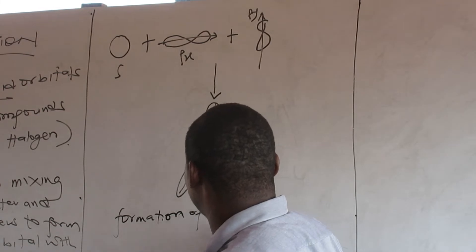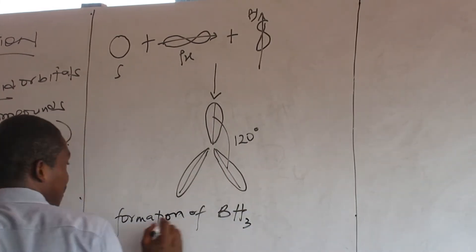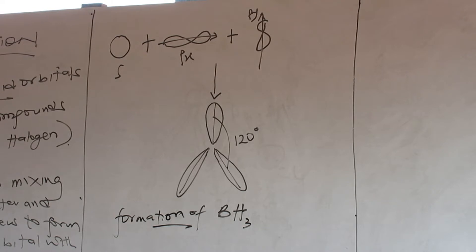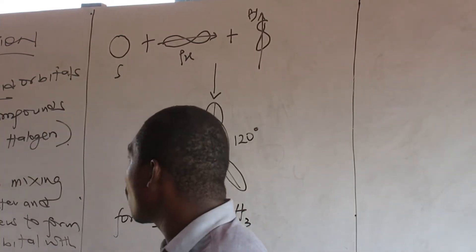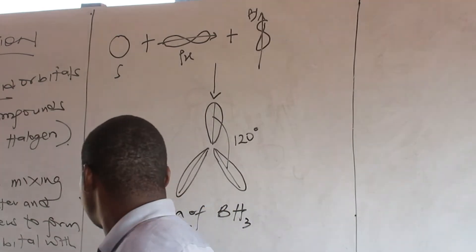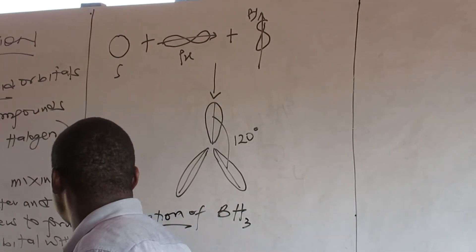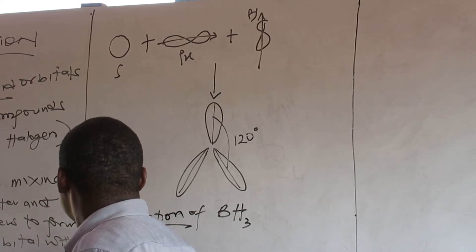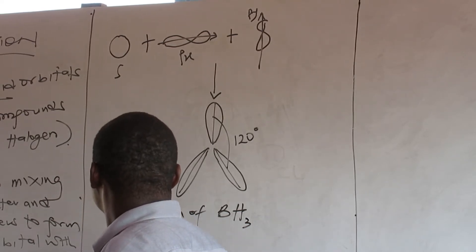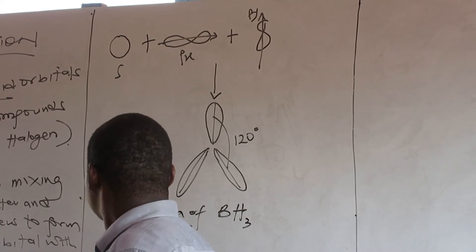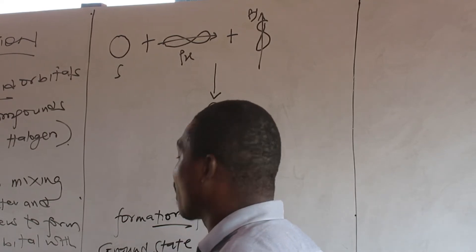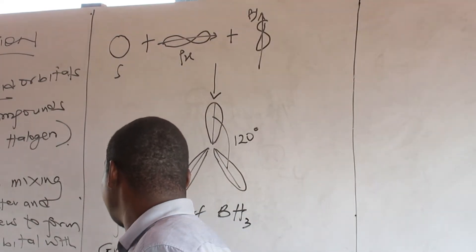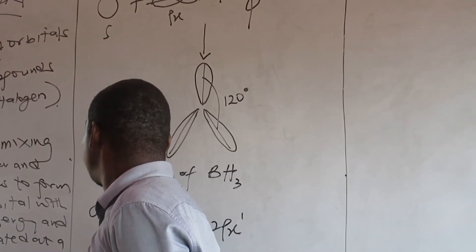So formation of BH3. Let's look at this. So it's BH3, so this is going to be H or halogen. The central atom is boron, atomic number 5. The central atom controls whether we are going to go sp3, sp2, or whatever. So let's look at the ground state for boron. Ground state for boron: 1s2, 2s2, 2px1.